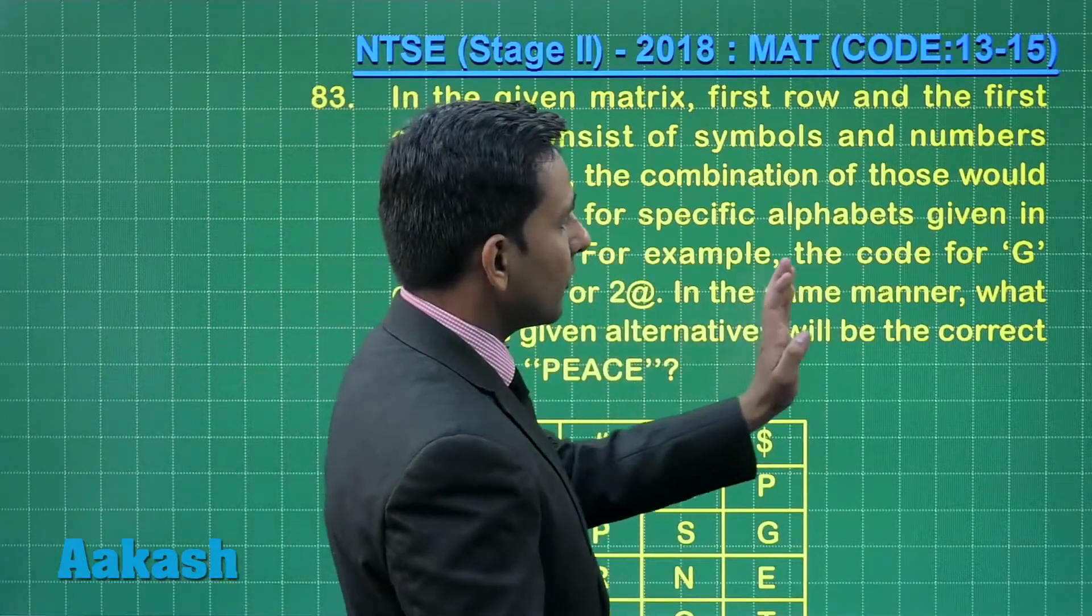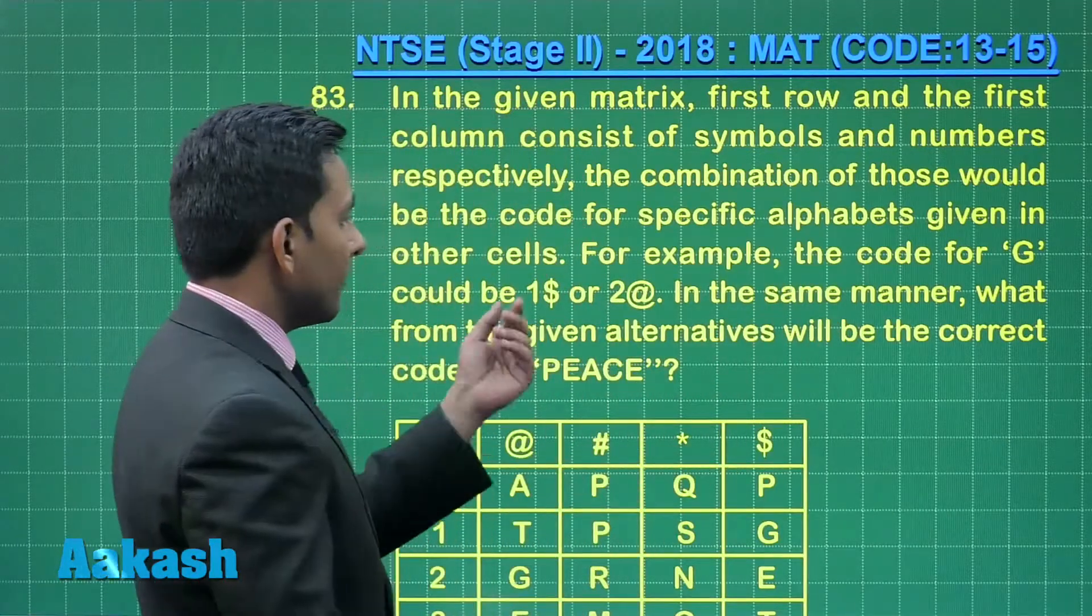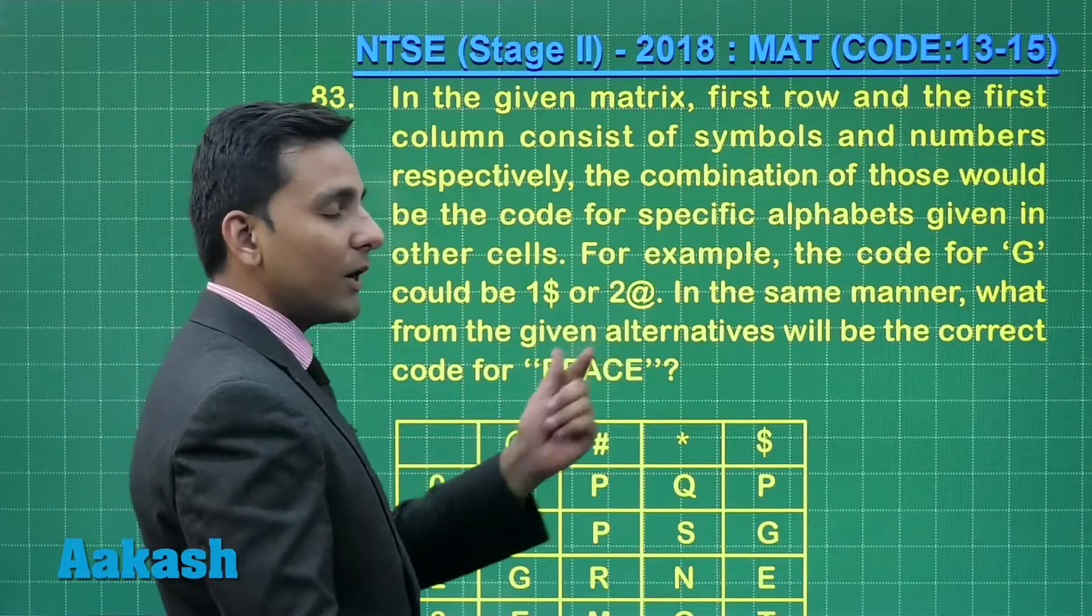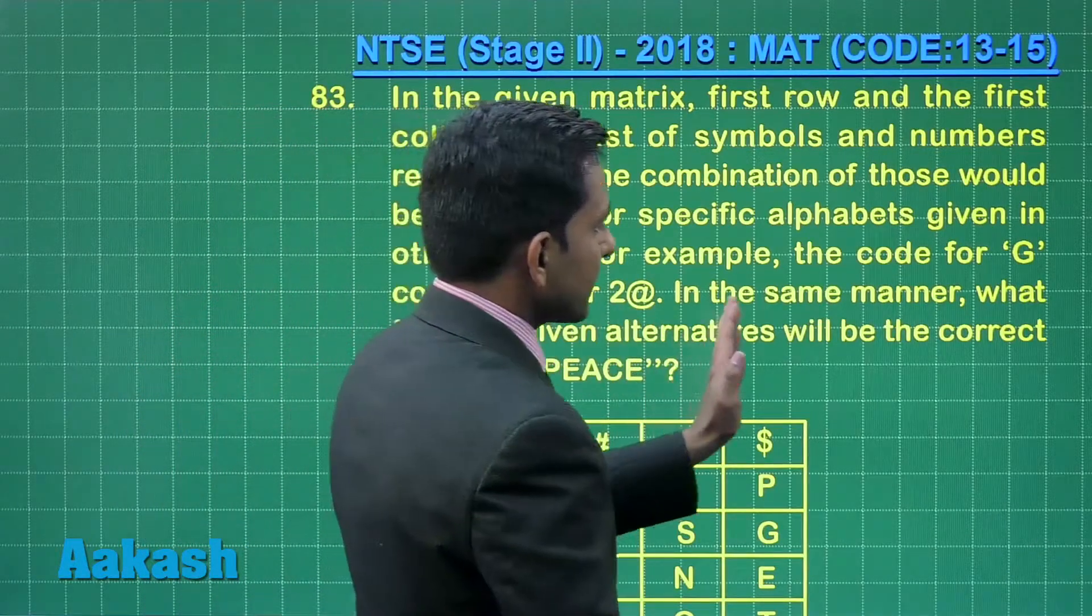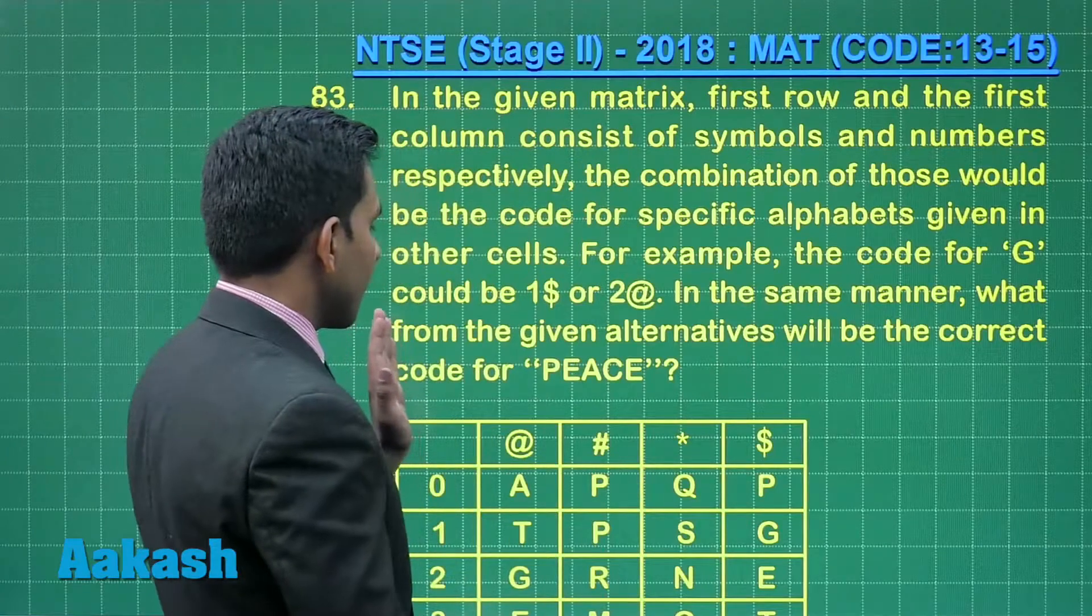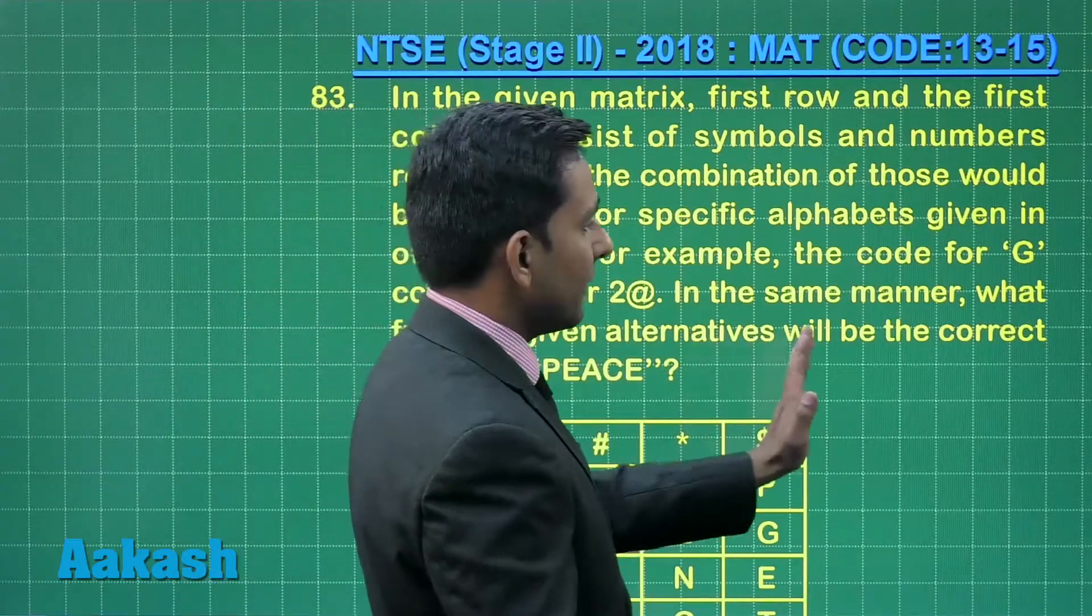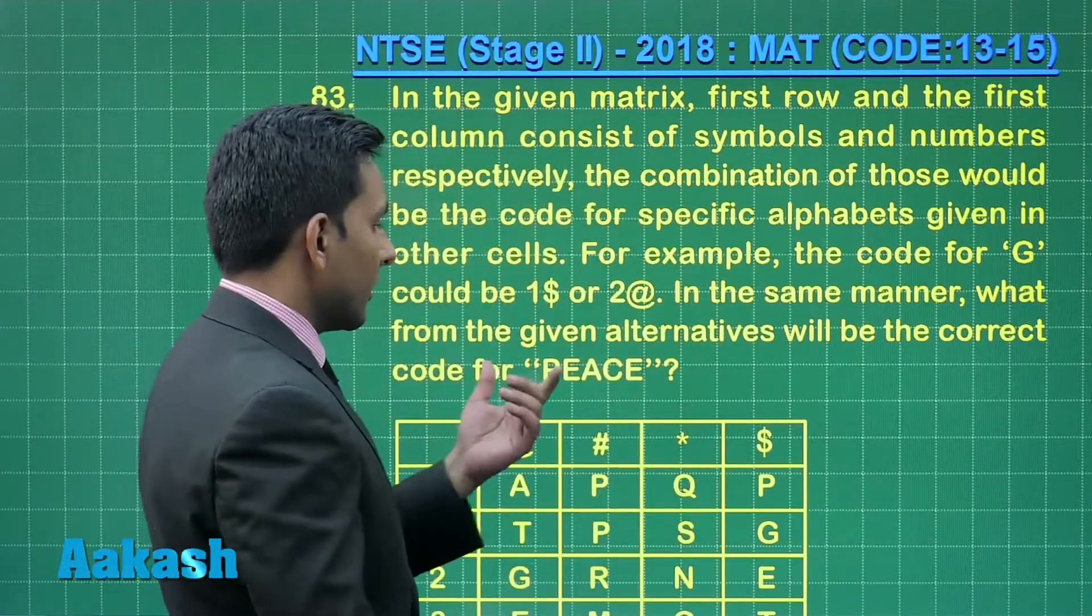For example, the code for G could be 1 dollar or 2 at the rate. In the same manner, what from the given alternatives will be the correct code for word PIECE.